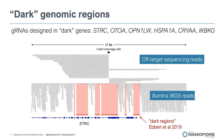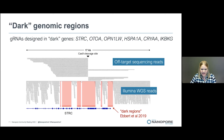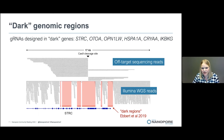We wanted to demonstrate why long-read sequencing is advantageous for detecting Cas9 off-targets. We designed guide RNAs to target the so-called dark spots in the genome. This is an example for the STRC gene. On the bottom, we see Illumina whole genome sequencing reads for this locus, where the red boxes indicate dark regions described by Ebert et al. in 2019, and we can see that no Illumina reads map to these regions. On the top, the OTS data shows our Cas9 cleavage site within one of these dark regions, with full coverage across the entire region without any problems.